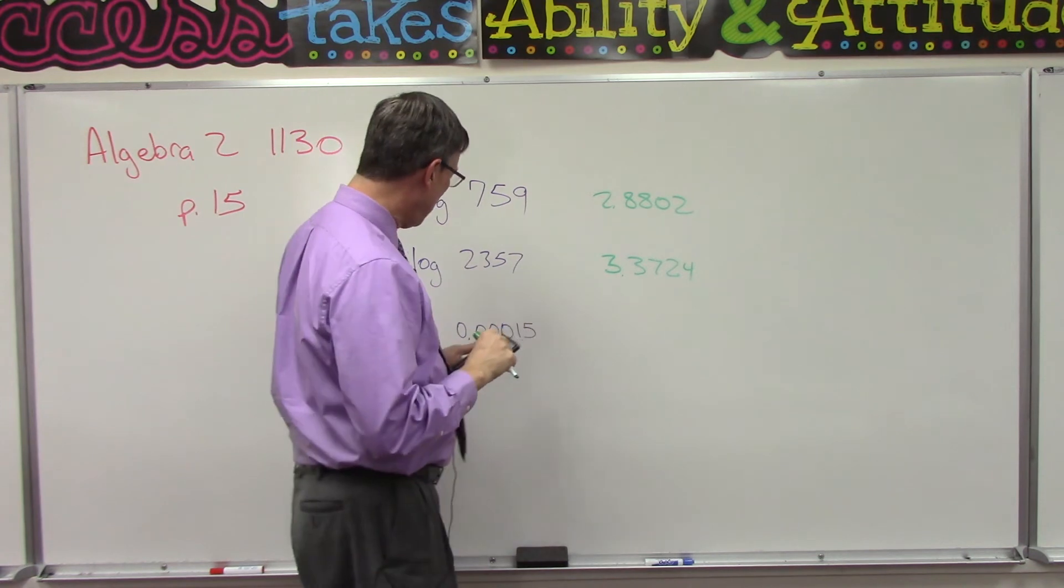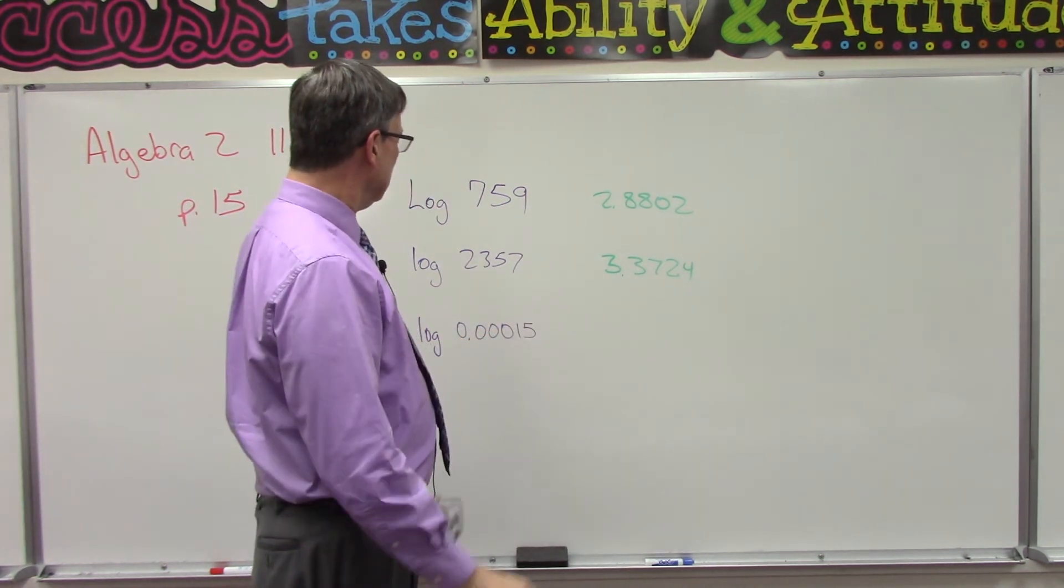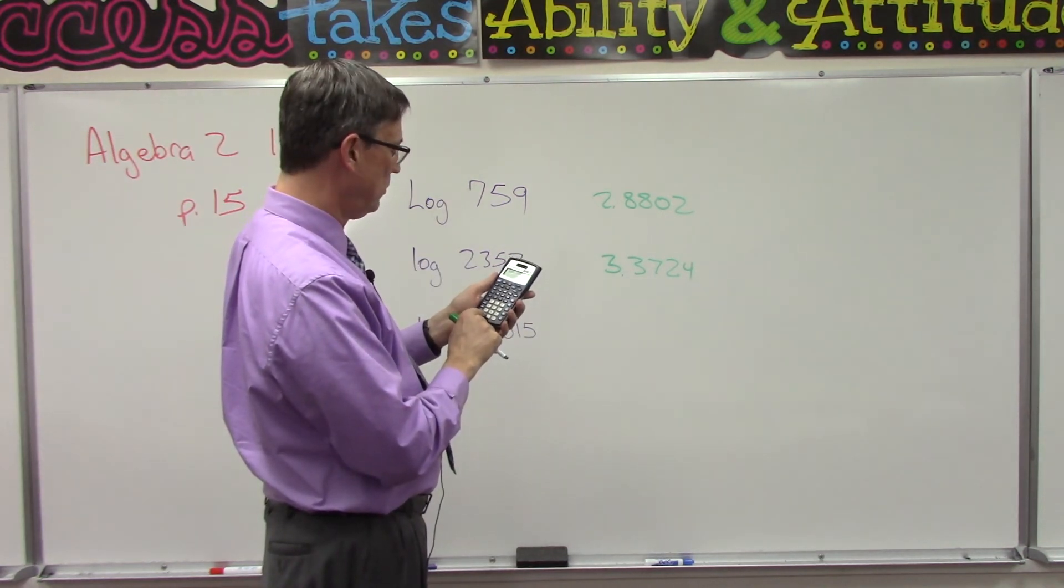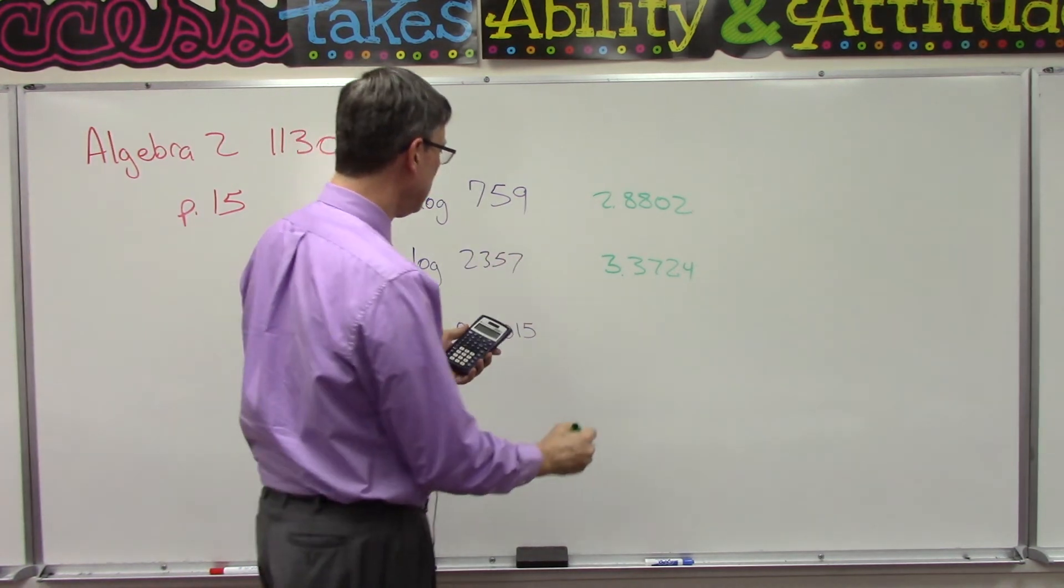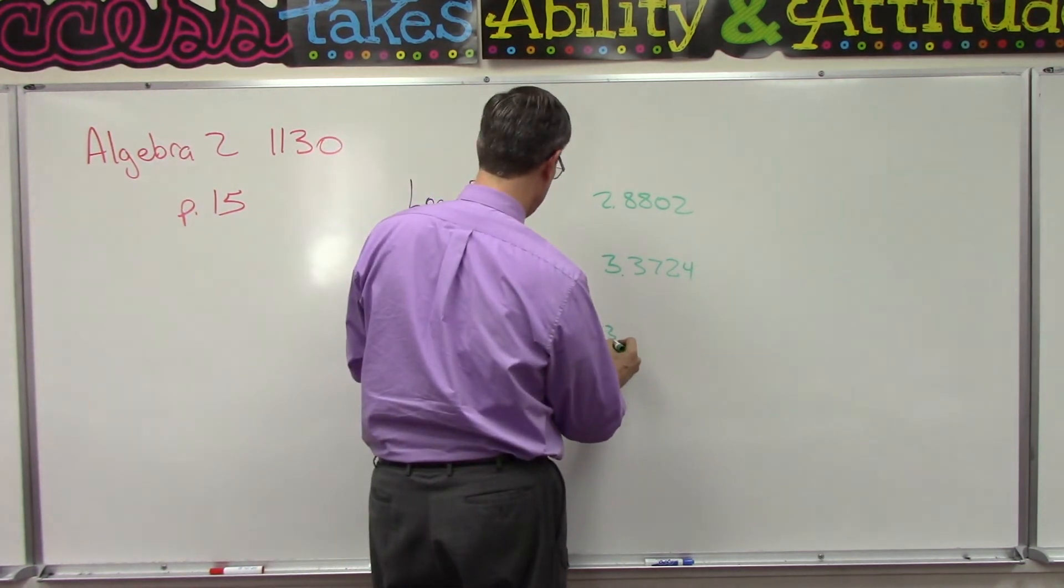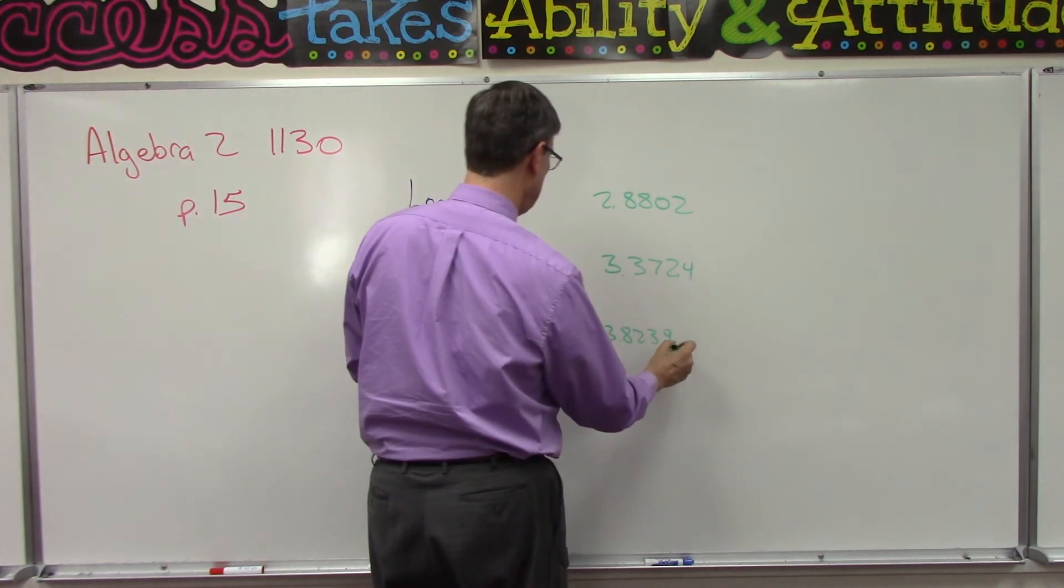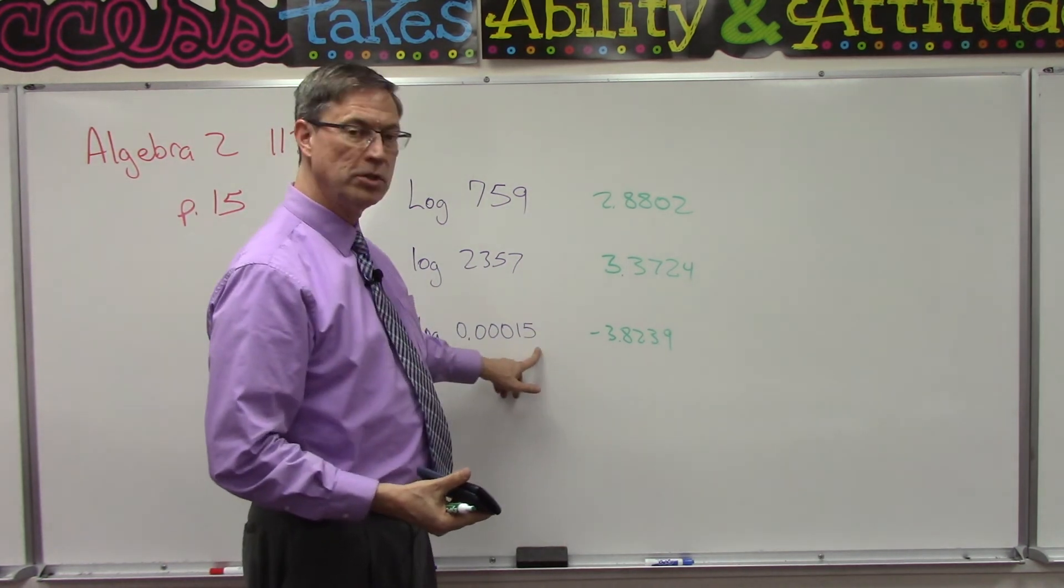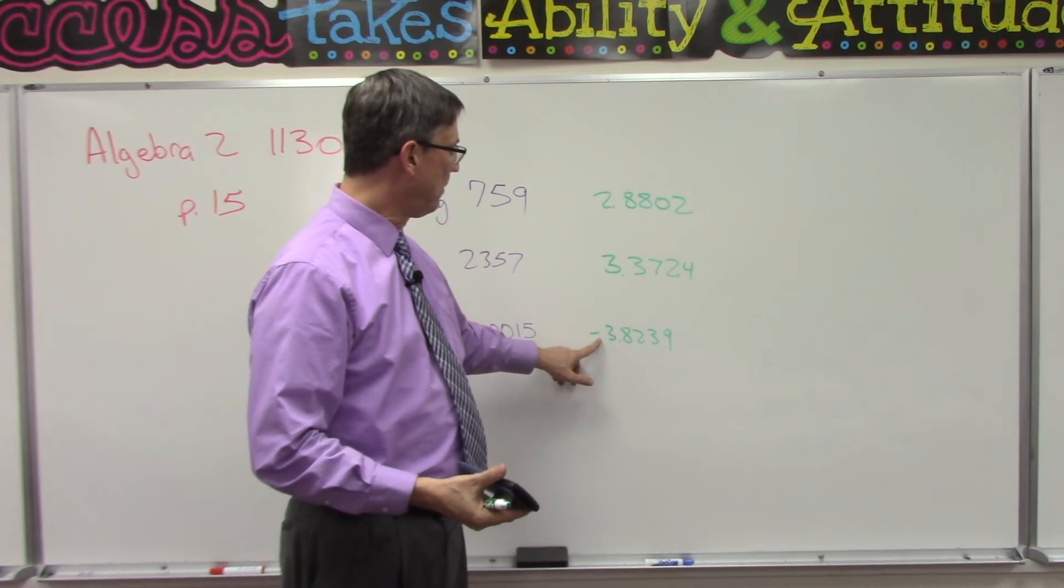All right, here we go. Let's find the log of a decimal number. Log 0.00015, boom, and I get -3.8239. Notice if it is a fraction or a decimal number, then that means that my answer is going to be negative. Now here's the little trick I have to tell you about in the score key.